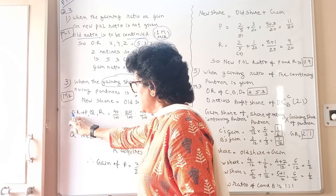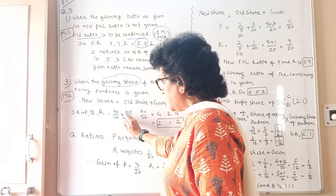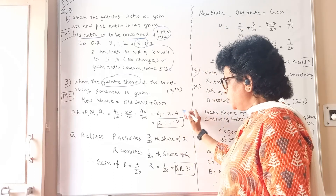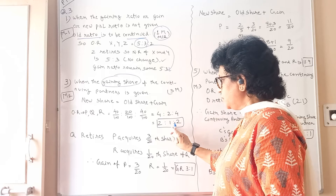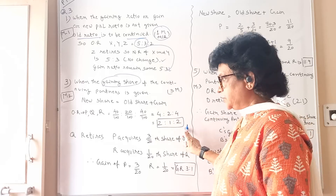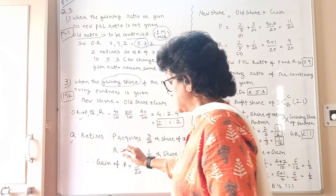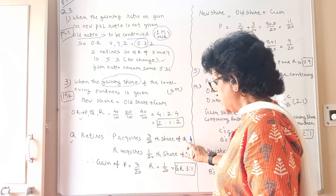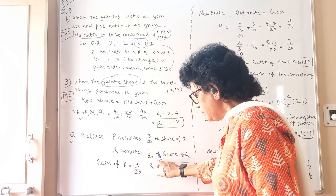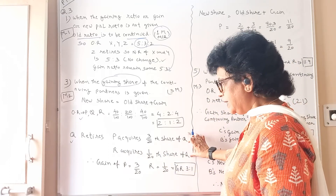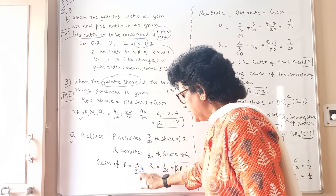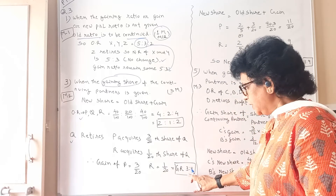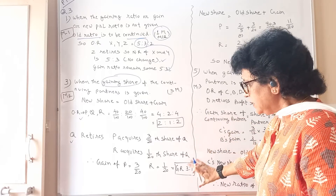When the gaining share is given, calculate this way. The old ratio is given: P, Q and R is 40/100, 20/100, 40/100 — you can reduce it to 4:2:1, further to 2:1:2. This is your old ratio. Now Q retires. P is acquiring 3/20 portion of Q's share and R acquires 1/20 of Q's share. So gain for P is 3/20 and R is 1/20. In reduced form, the gain ratio is 3:1.